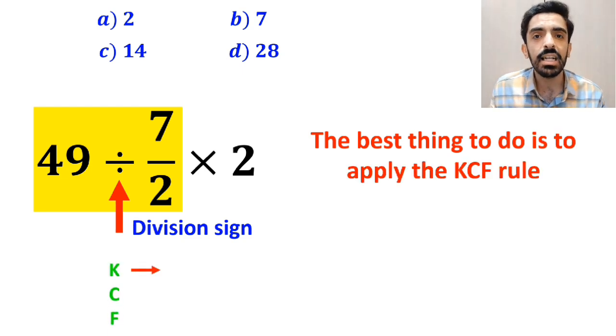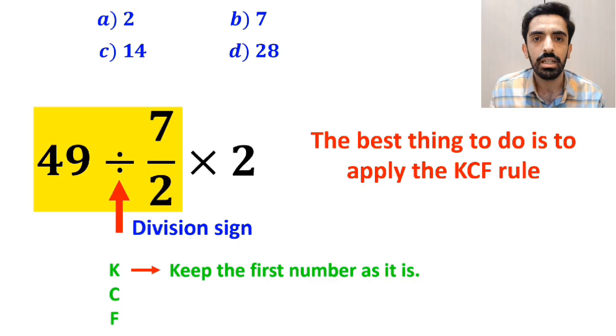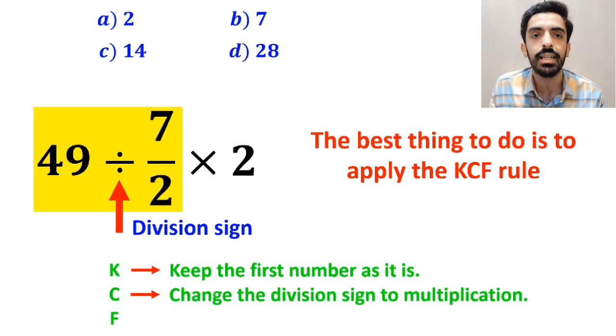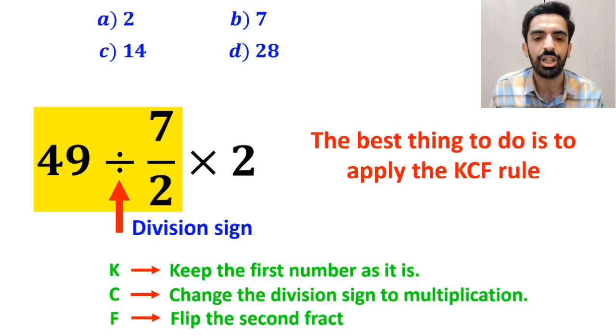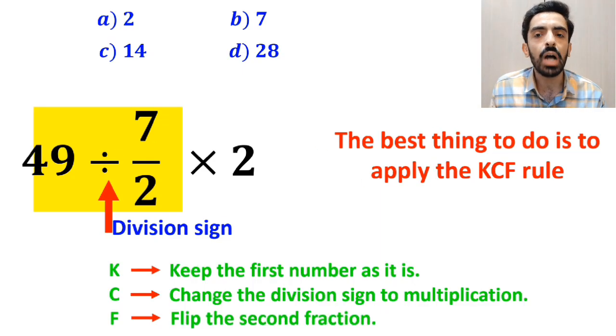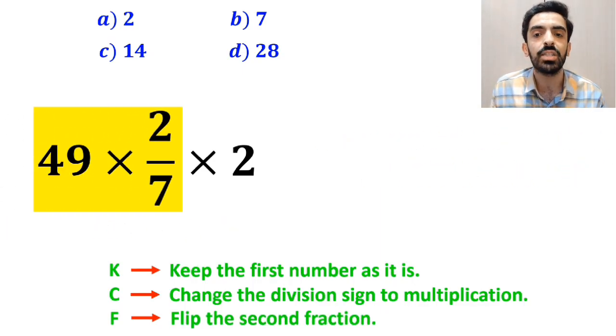In this rule, K stands for keep the first number as it is. C stands for change the division sign to multiplication, and F stands for flip the second fraction. So, we'll remove the highlighted part and rewrite this expression as 49 times 2 over 7 multiplied by 2.